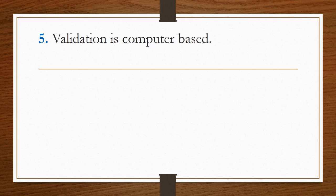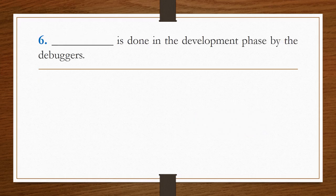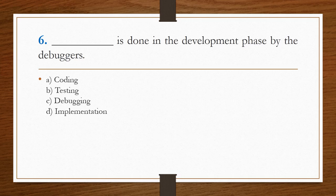Next question: validation is computer based — true or false? Validation is computer based, it is true, so option A is the answer. Next question: what is done in the development phase by debuggers? Options are coding, testing, debugging, and implementation. Answer is option C, debugging.